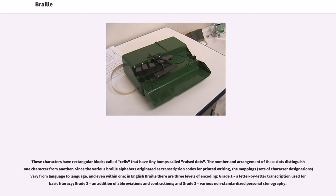Since the various Braille alphabets originated as transcription codes for printed writing, the mappings and sets of character designations vary from language to language, and even within one. In English Braille there are three levels of encoding: grade one, a letter-by-letter transcription used for basic literacy; grade two, an addition of abbreviations and contractions; and grade three, various non-standardized personal stenography.